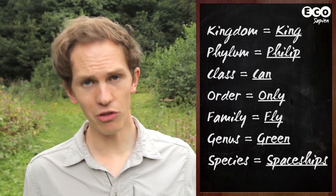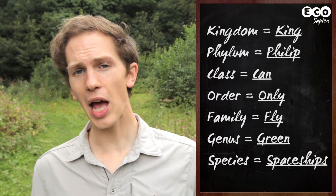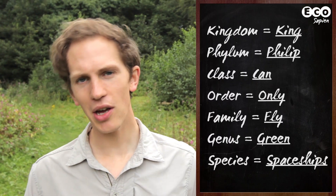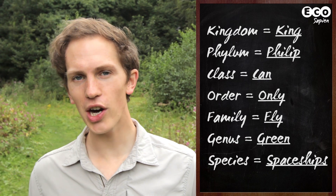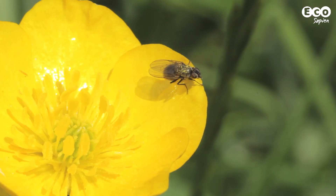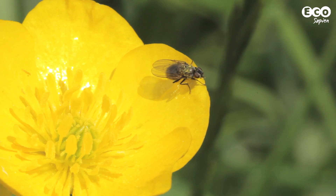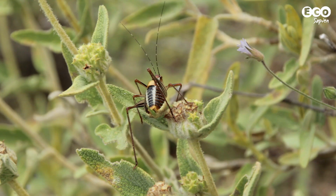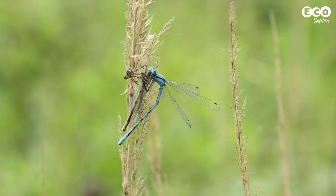You can remember the names of the categories using this helpful mnemonic: King Philip can only fly green spaceships. But feel free to make up your own. So insect orders are all the order categories within the insect class.